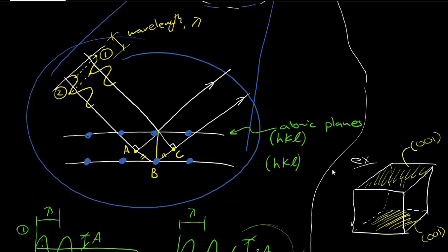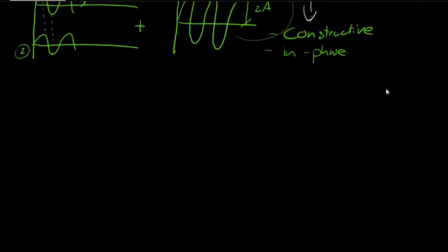So beam number 2 has had to travel the distance AB twice, longer than beam number 1. And we want to know when that extra distance is going to leave beam number 1 and beam number 2 in phase with one another.